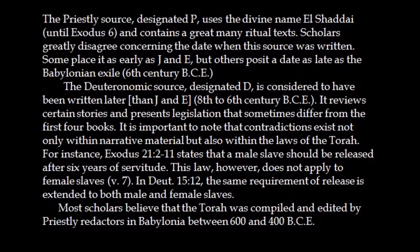Sometimes D contains totally new material, sometimes it comments on earlier material found in E. The same group that created the Deuteronomic school was also responsible for editing the final edition of the books of Joshua, Judges, Samuel, and Kings. They utilized a lot of earlier material — stories, legends, but also archival material from the royal courts of Judea and northern Israel. You can tell when their editorial hand is present.